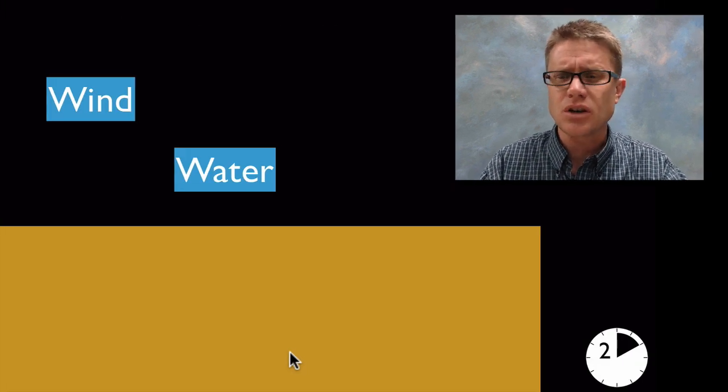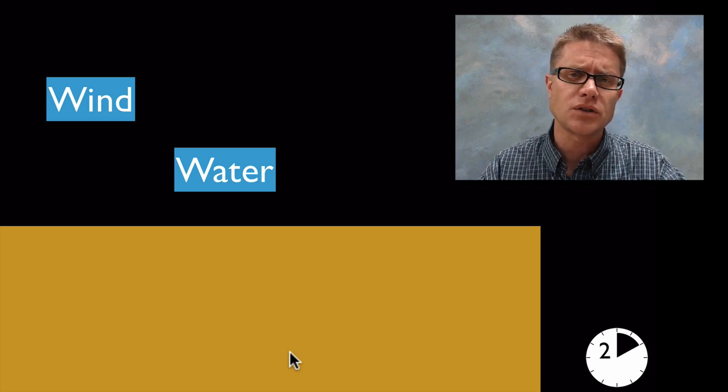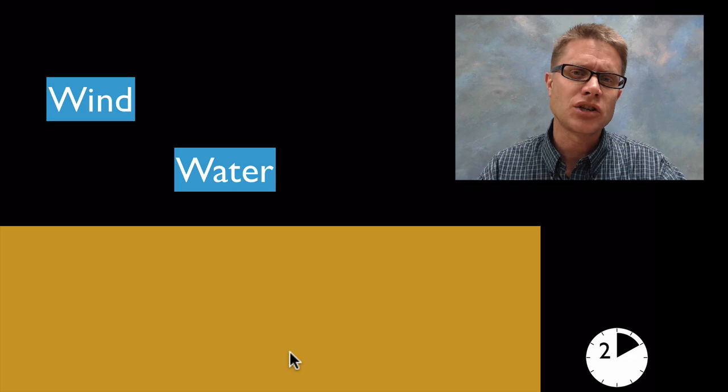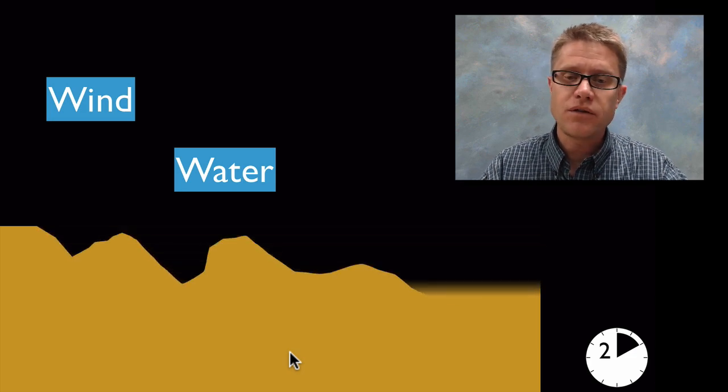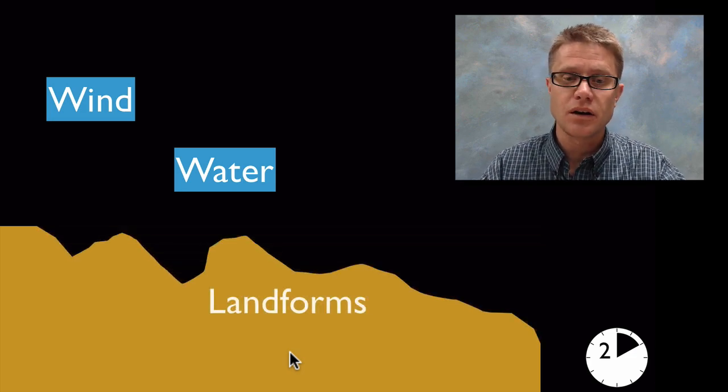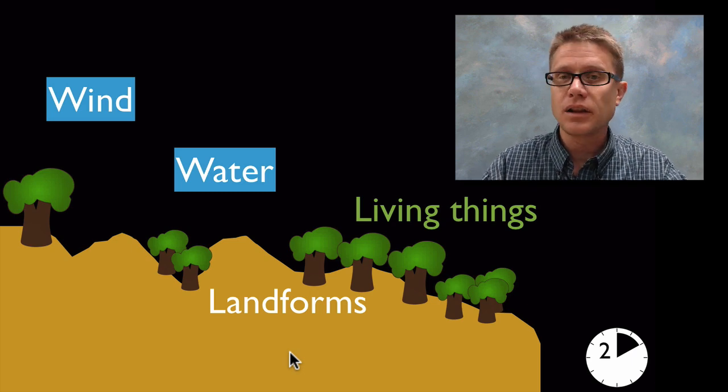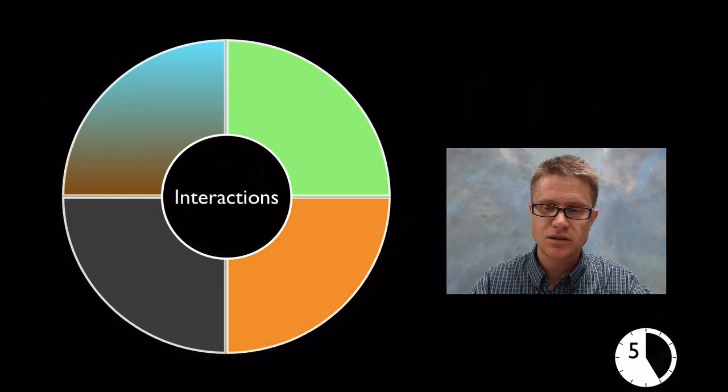So how do you teach all of this? In the lower elementary grades you want students to understand that wind and water are important. They shape the Earth and form the landforms on our planet. Those landforms open up areas where the life forms or living things can exist.